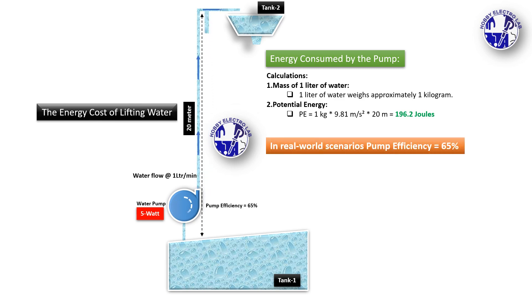Since the pump we are using is only 65% efficient, it will require more input power than the ideal 196.2 joules. In practice, the pump will consume approximately 300 joules of energy to pump 1 liter of water to a height of 20 meters, considering its 65% efficiency.